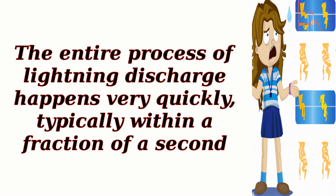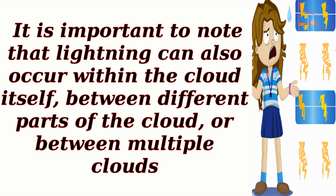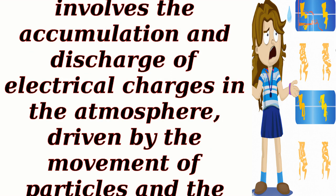The entire process of lightning discharge happens very quickly, typically within a fraction of a second. It is important to note that lightning can also occur within the cloud itself, between different parts of the cloud, or between multiple clouds. Overall, a lightning storm is a complex phenomenon that involves the accumulation and discharge of electrical charges in the atmosphere, driven by the movement of particles and the interaction between the cloud and the ground.